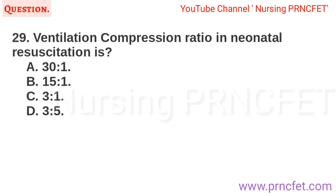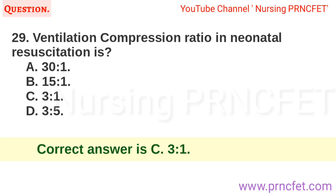Question 29: Ventilation compression ratio in neonatal resuscitation is: A. 30:1. B. 15:1. C. 3:1. D. 3:5. Correct answer is C. 3:1.